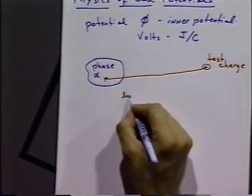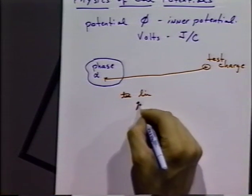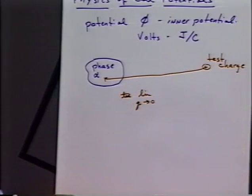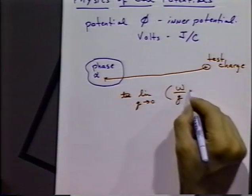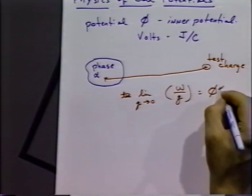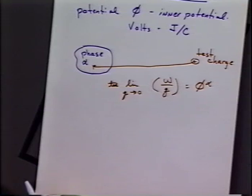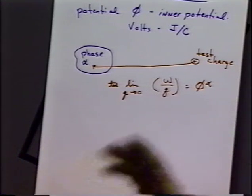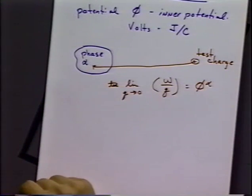At the limit, as the test charge approaches zero in charge, it is the work versus charge — and that is going to be our inner potential of phase alpha. According to electrostatics theory, it really does not matter about the path that charge takes. It can take any particular path as long as it gets to the inside of our phase.